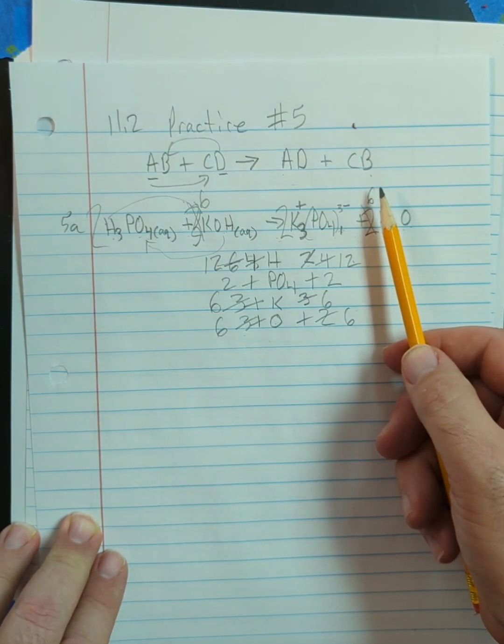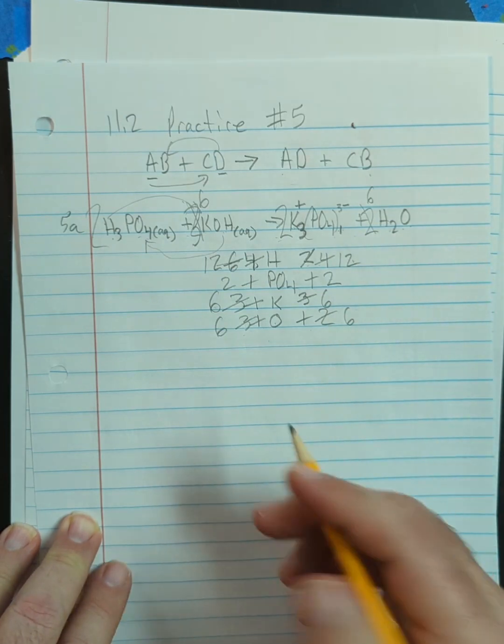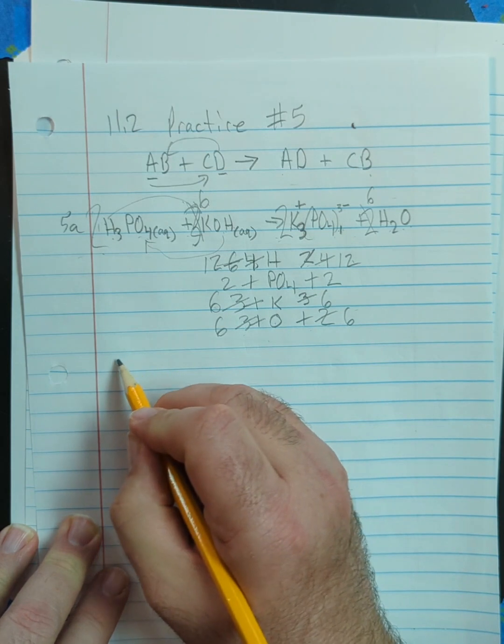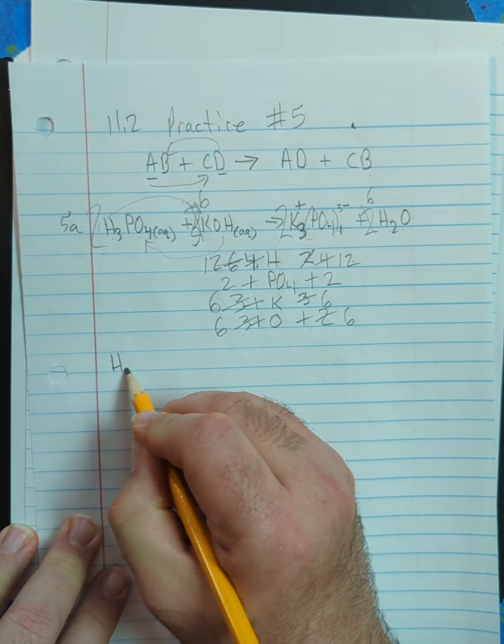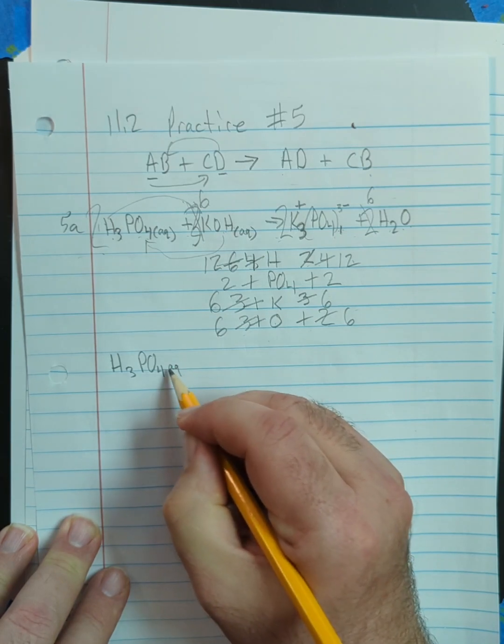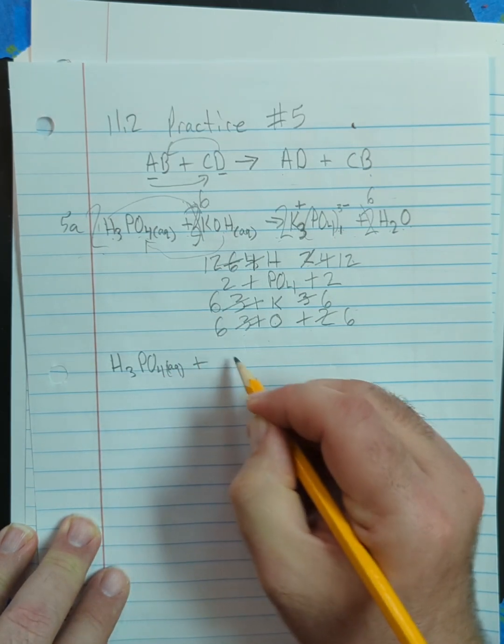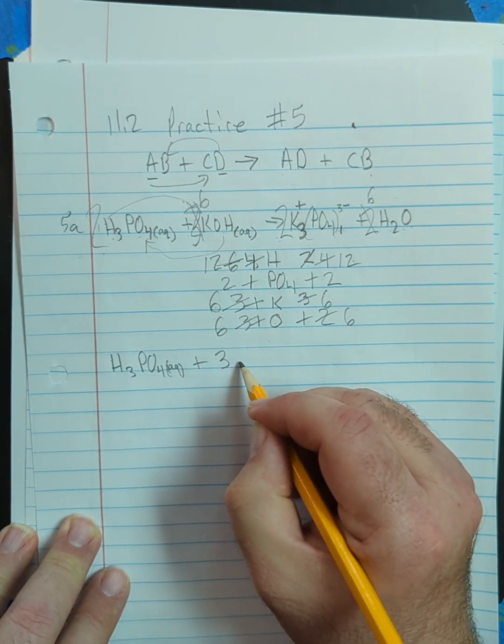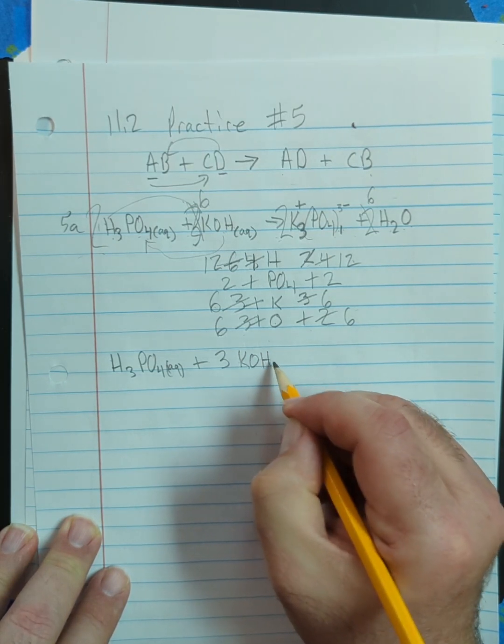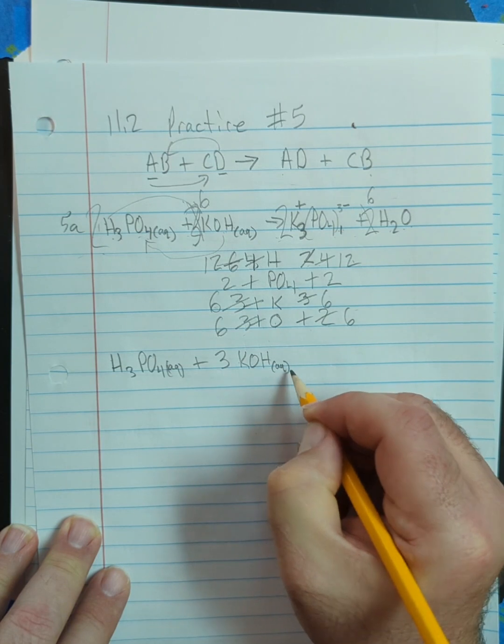So this is not the simplest balanced equation. So we can divide all of the coefficients by two, and we'd have one molecule of H3PO4 aqueous, plus three molecules of KOH aqueous,